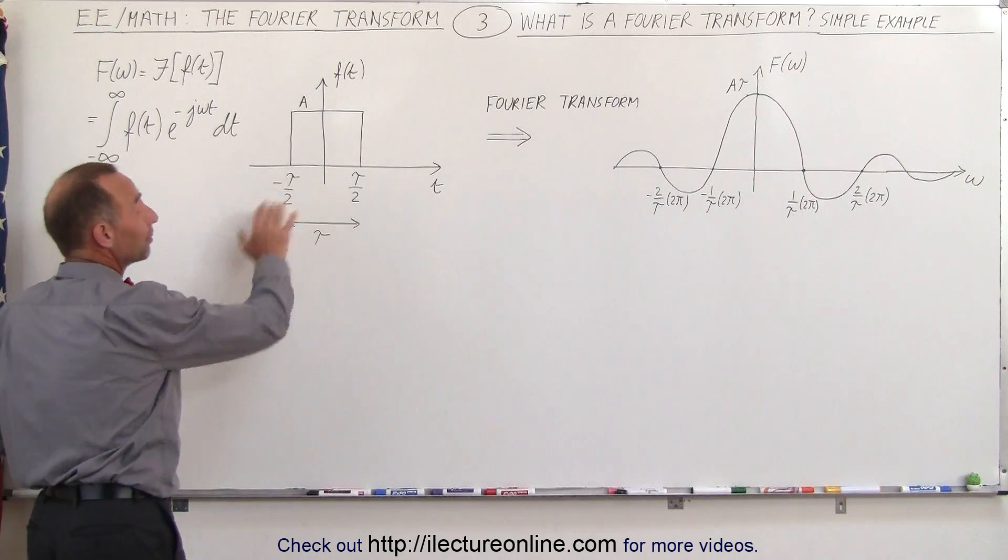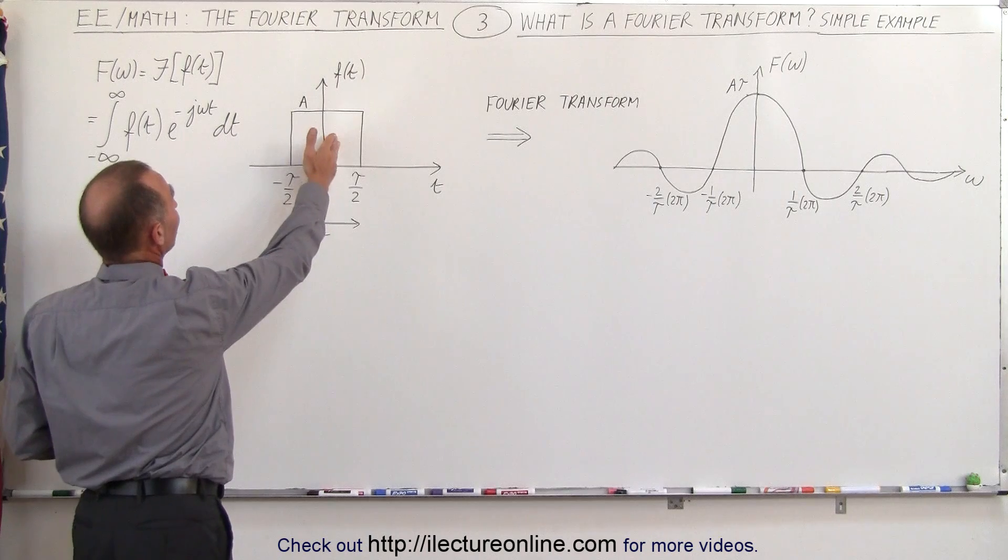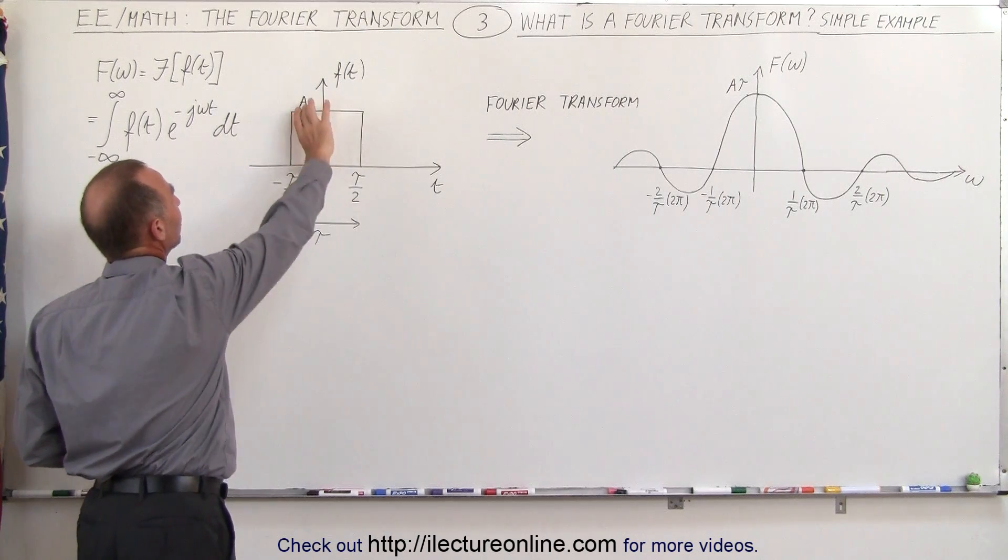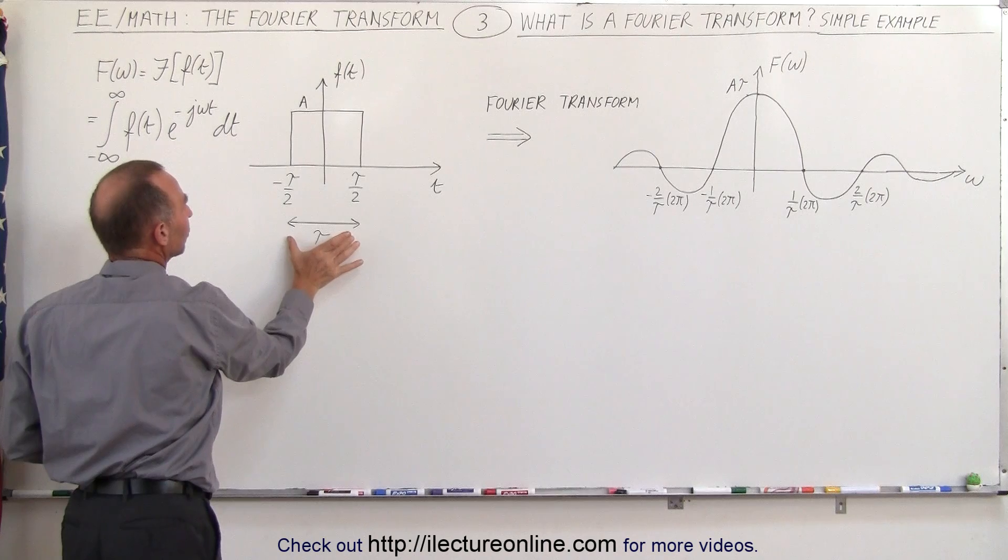Again we'll take this familiar input function. We have a single step function, amplitude A, the pulse width is equal to tau.